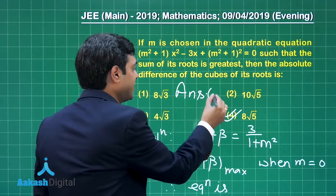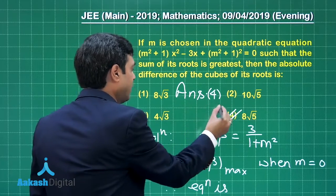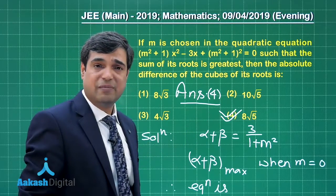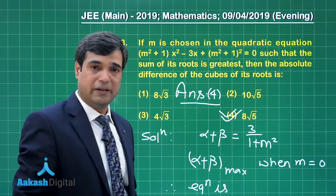From the given options, 8√5 is available as option number 4 — the correct answer. Let us move on to question number 4 of the paper.